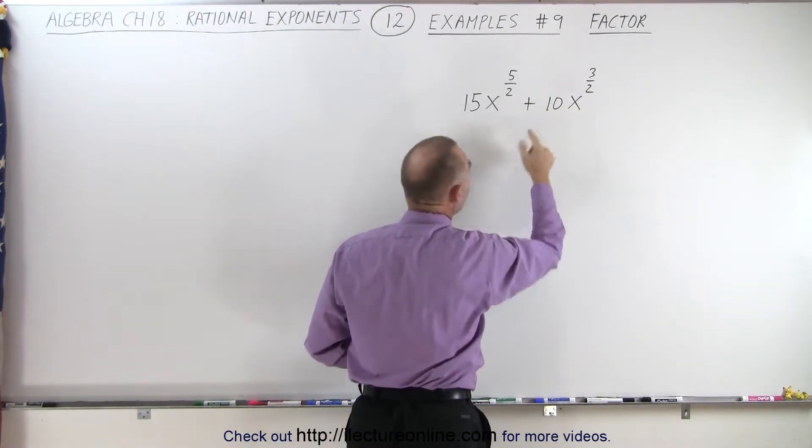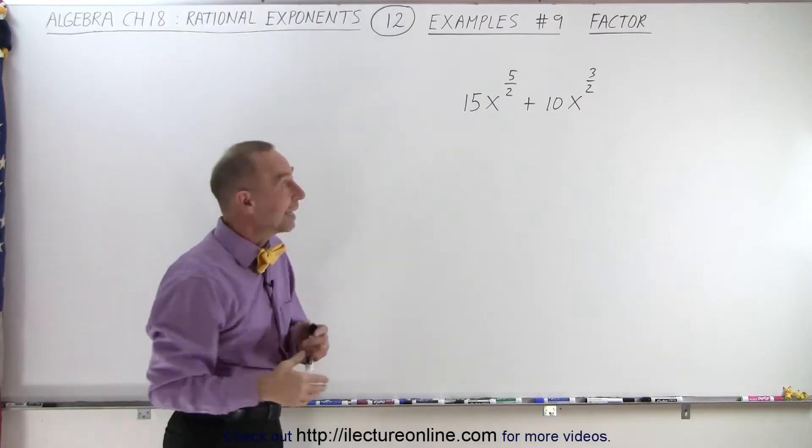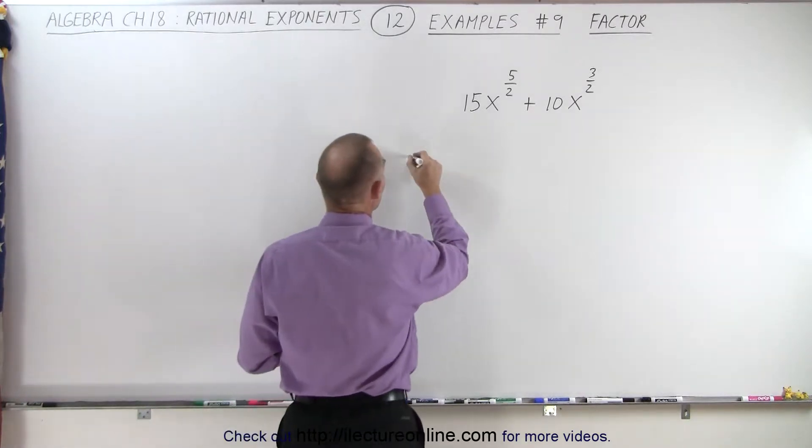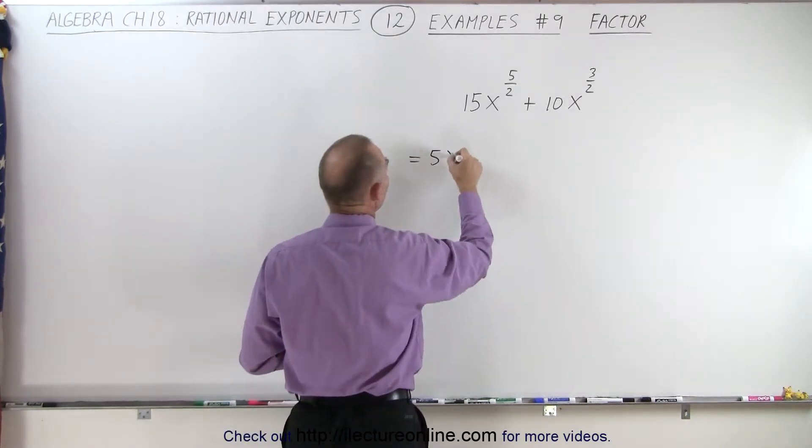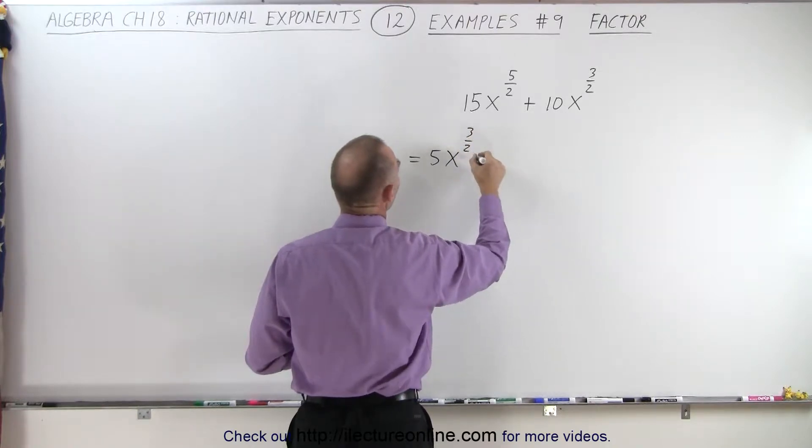And of course, with the 15 and the 10, we can also factor out a 5. So this is going to be equal to 5 times x to the three halves power.